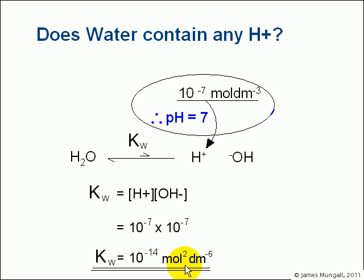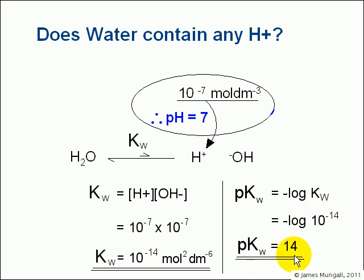Strictly speaking, the units would be moles squared dm to the minus 6, just because I've got that unit times itself. I can work out pKw by doing minus log of Kw, so that would be minus log of 10 to the minus 14, which gives a value of 14, and that is true at 298 degrees Kelvin.